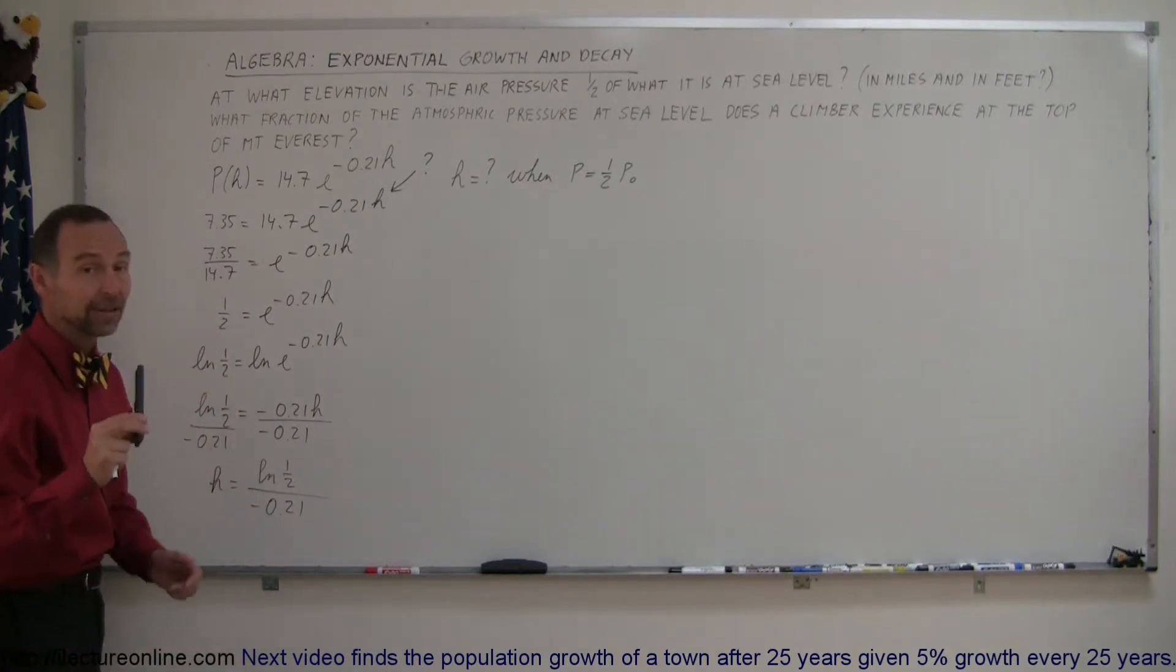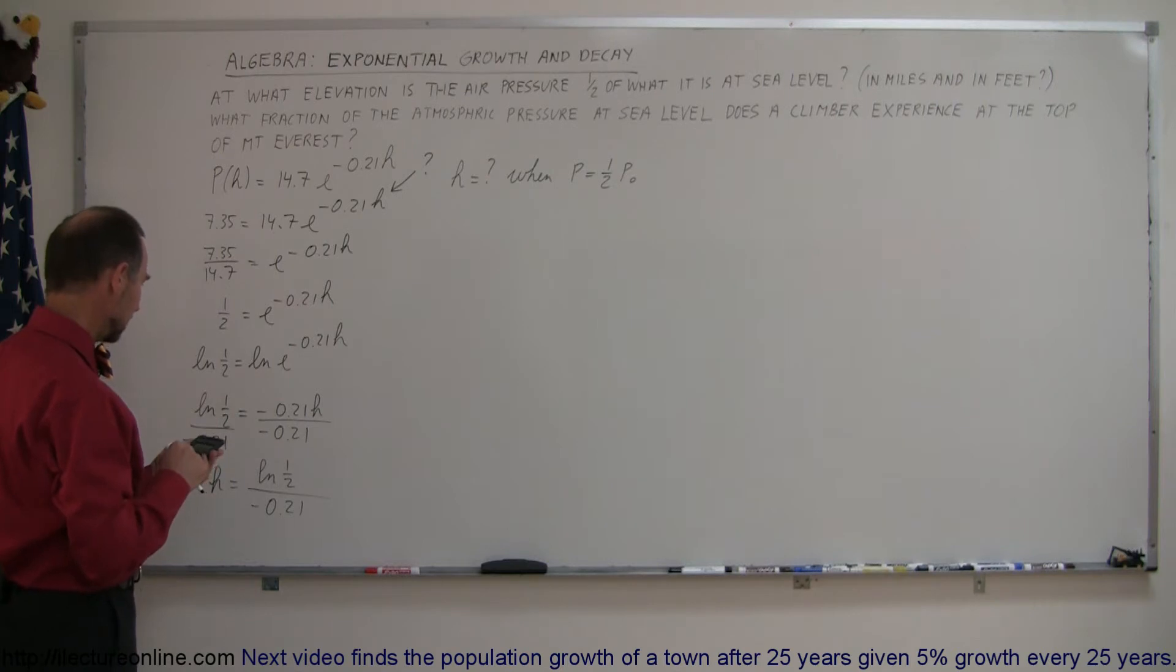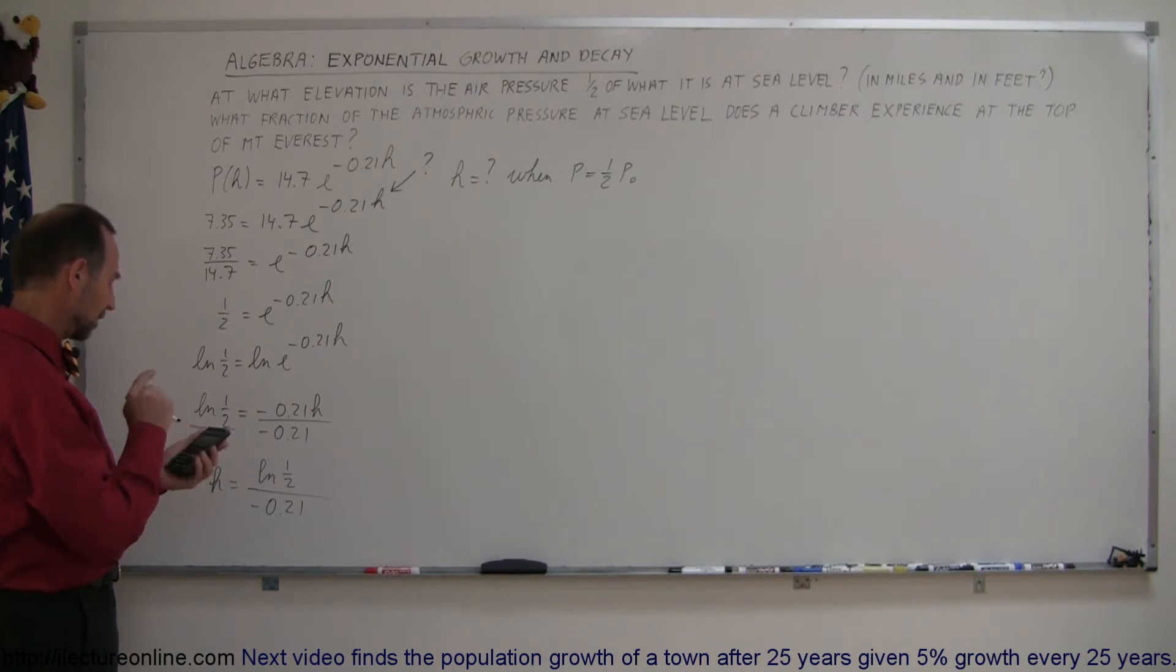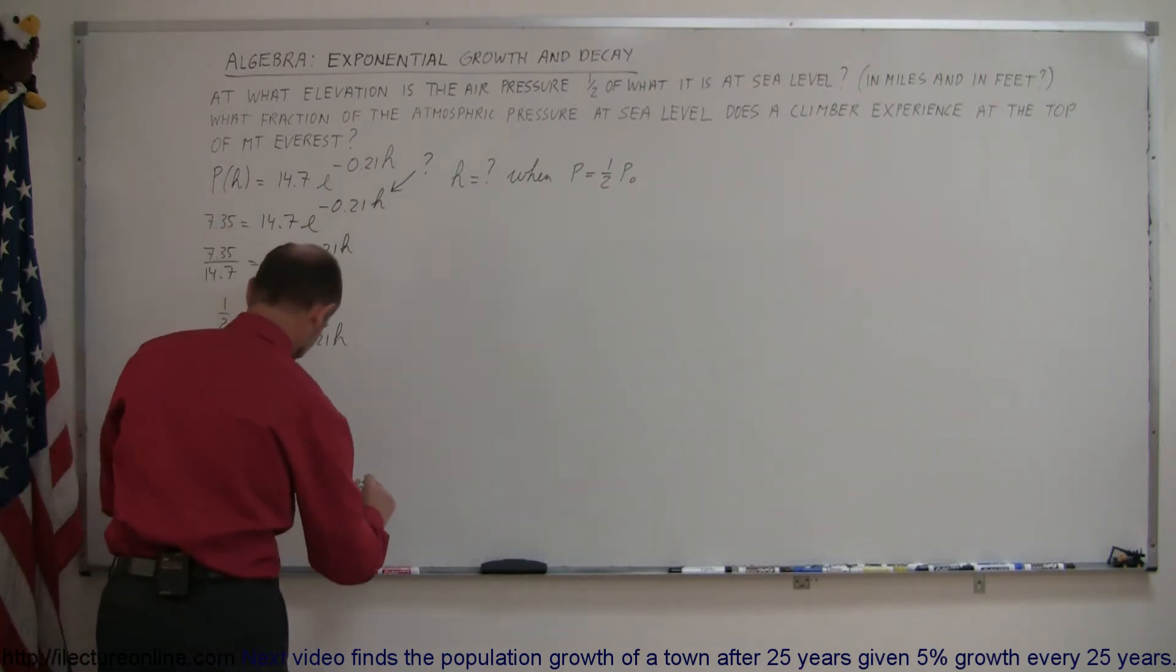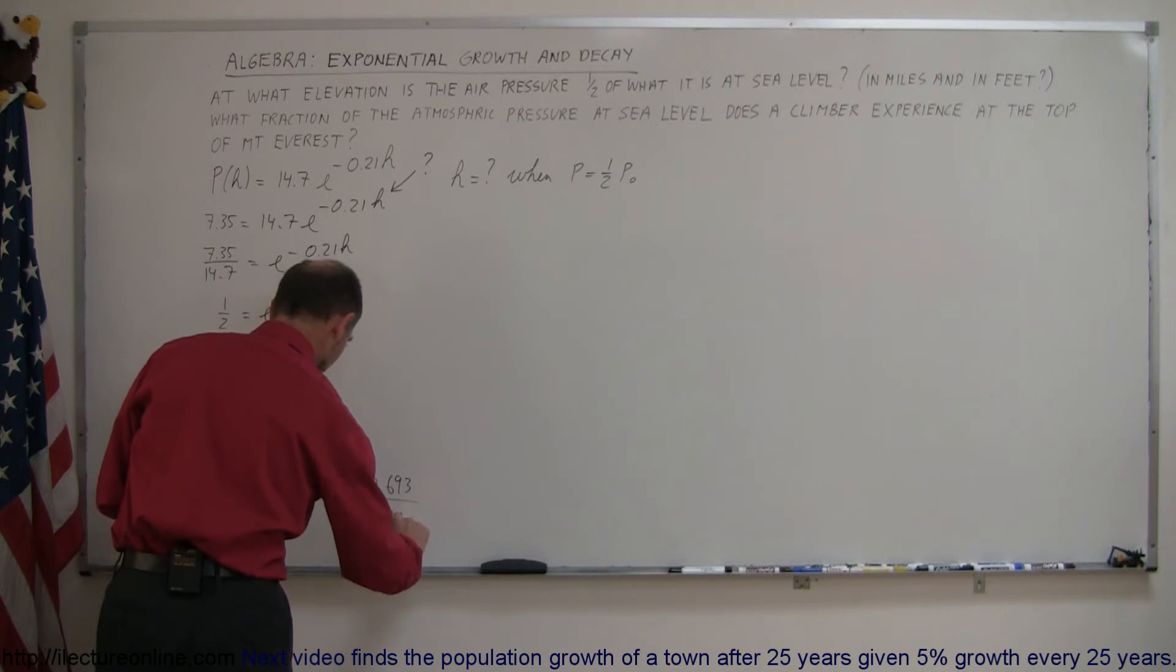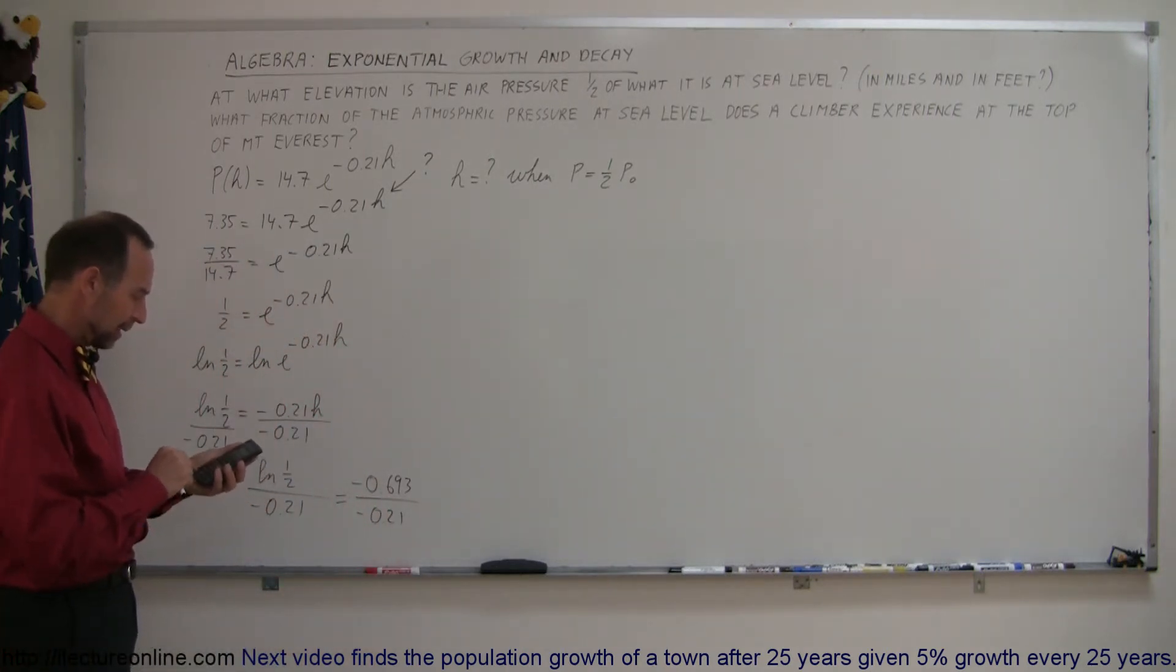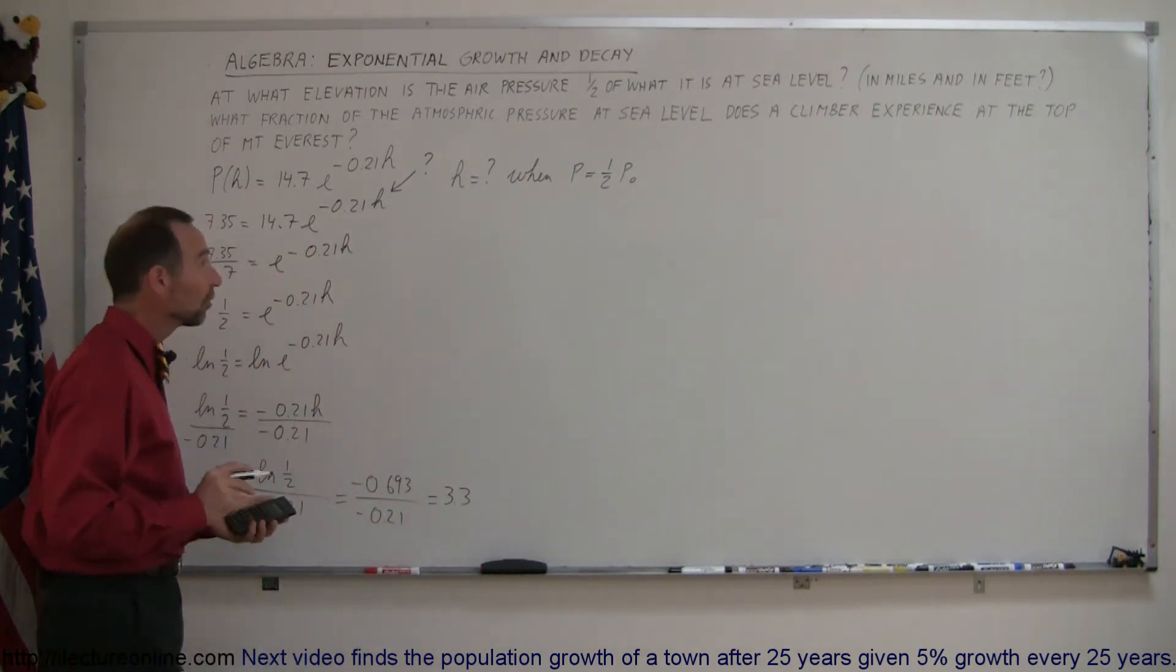Now we grab our calculator and find out what that equals. Taking the natural log of 0.5, that gives us -0.693, that familiar number again. Divide by -0.21 and that's equal to 3.3, and H was in miles in this particular equation, so this is 3.3 miles in elevation.